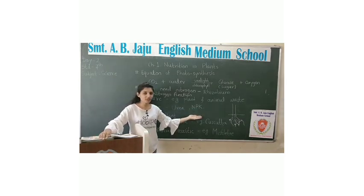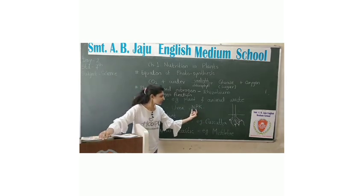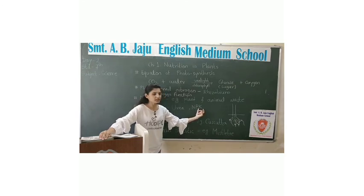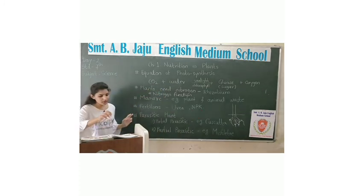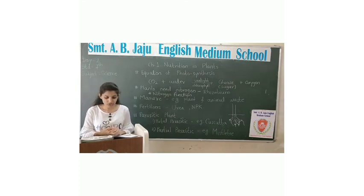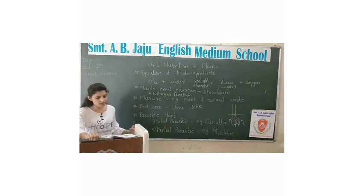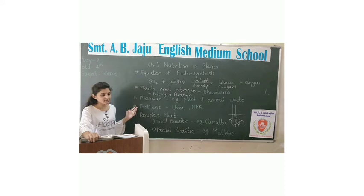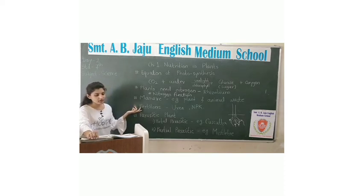We have a fertilizer known as NPK, where N stands for nitrogen, P stands for phosphorus, and K stands for potassium. Manure is decomposed plant and animal waste and is rich in nitrogenous substances. The soil can be made fertile by adding manure. Chemical fertilizers such as urea, which contain nitrogenous substances, are also added to the soil to increase its fertility.